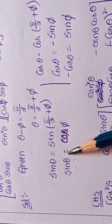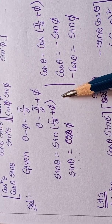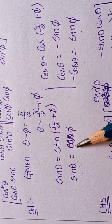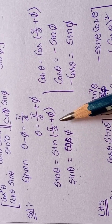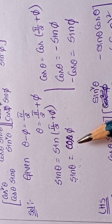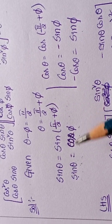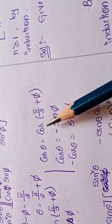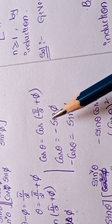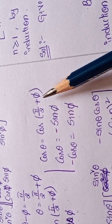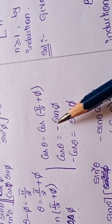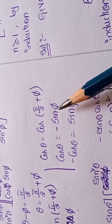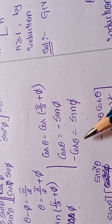Second quadrant means 90 plus theta. So cos of 90 plus pi means cos pi. Sin theta equals cos pi. Next, apply cos: cos theta equals cos of 90 plus pi. 90 plus pi means second quadrant — second quadrant means it will get negative. So 90 plus pi means sin pi, so minus cos theta equals sin pi.